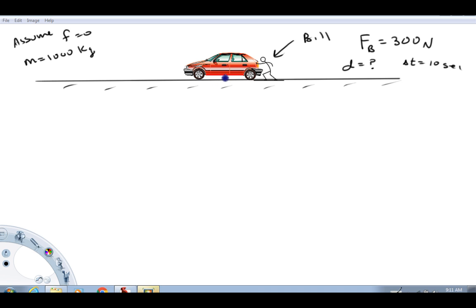In this example we've got a car, which we're going to assume is a thousand kilogram car, and we got Bill here who's going to push on that car with a force of 300 newtons. We're going to assume that there's no frictional forces or any other important forces to consider acting on the car, and we're going to try to calculate the distance that car is going to travel in a time of 10 seconds if Bill can hold that 300 newton force constant.